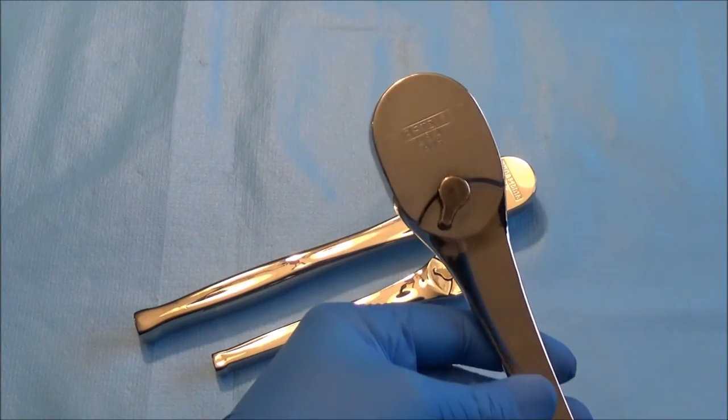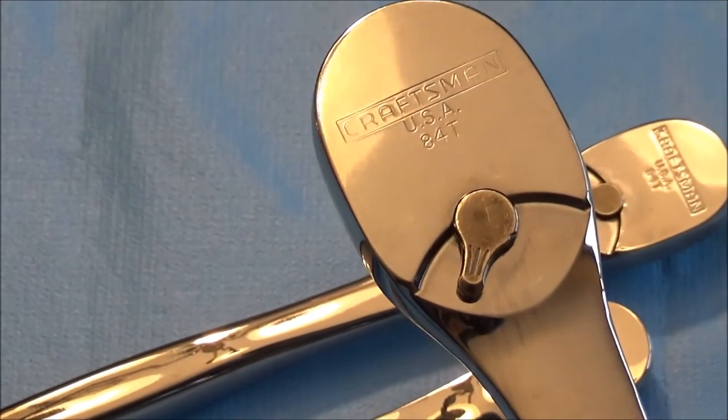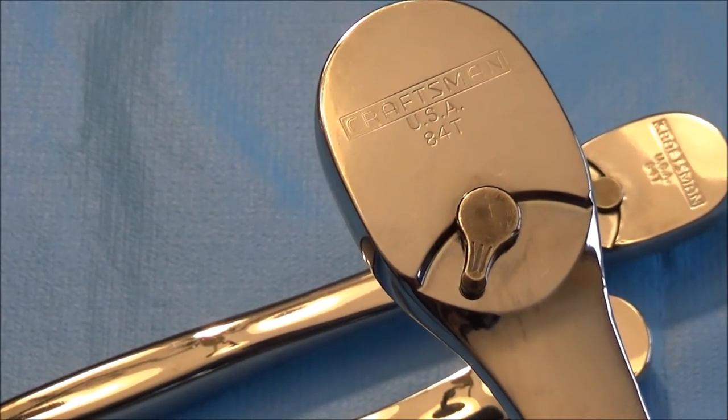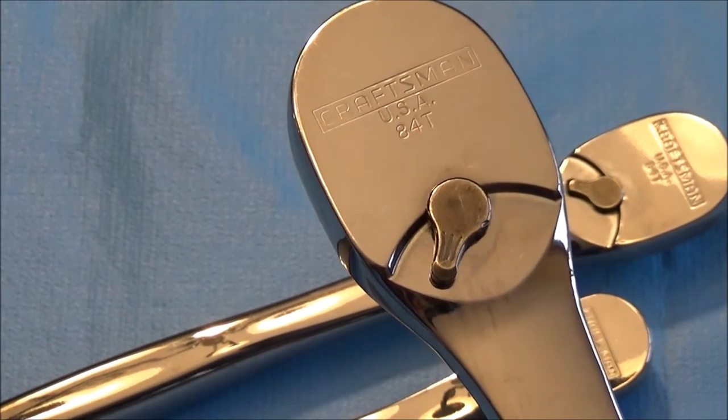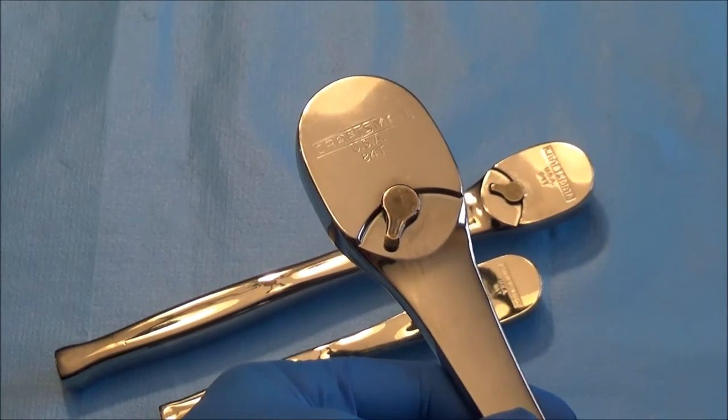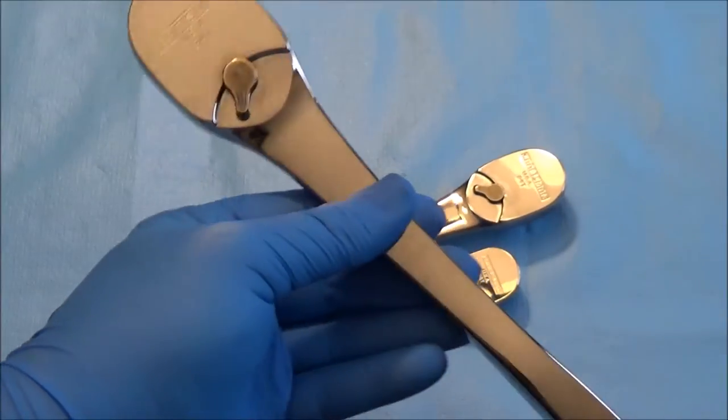Let's zoom in to get a look at what we're working with here. Each one of these ratchets has an 84 tooth gear, made in the USA with the Craftsman branding on it.